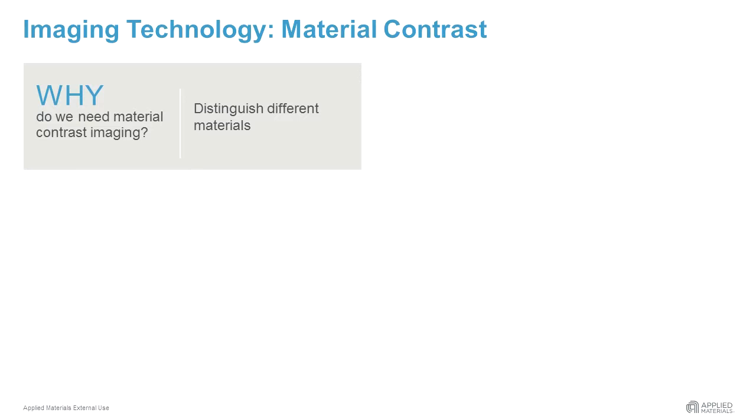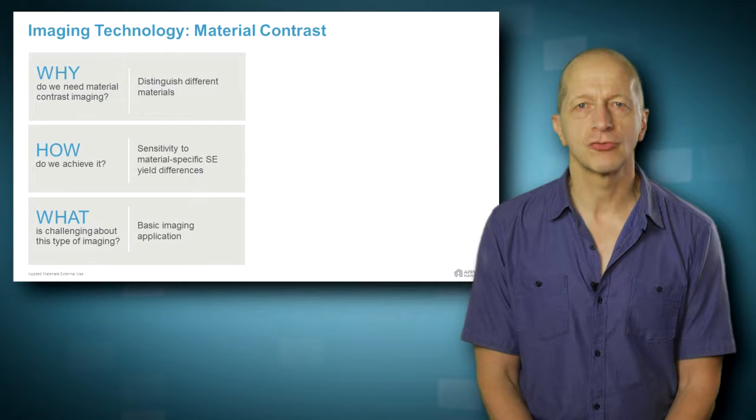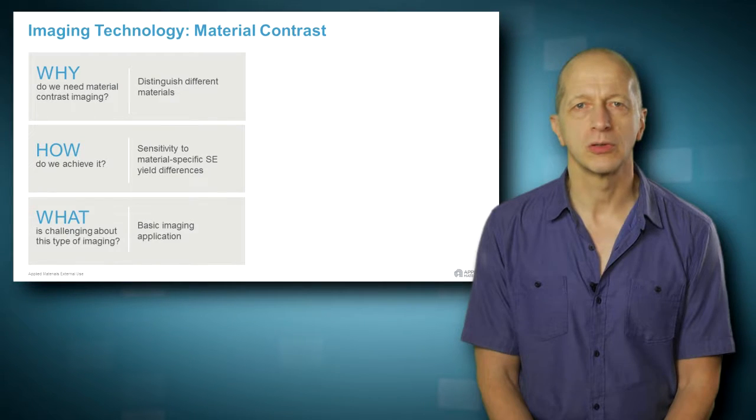On top of the basic image creation with secondary electrons, there are imaging capabilities and modes which enable many different applications for semiconductor process control. We shall review the key ones.